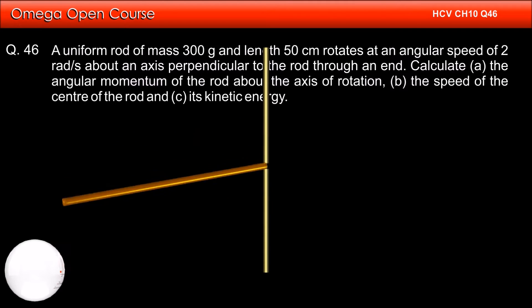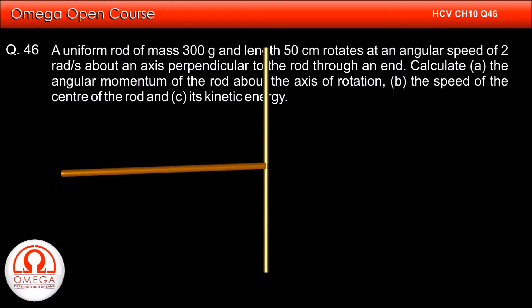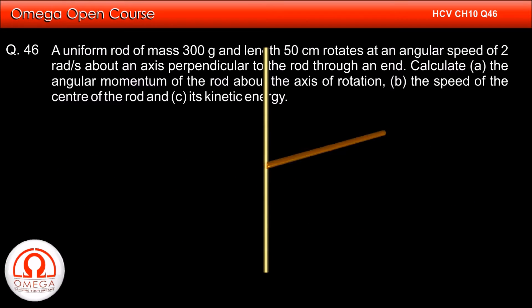A uniform rod of mass 300 grams and length 50 cm rotates at a uniform speed of 2 radians per second about an axis perpendicular to the rod through an end. Calculate: (a) the angular momentum of the rod about the axis of rotation, (b) the speed of the center of the rod, and (c) its kinetic energy.